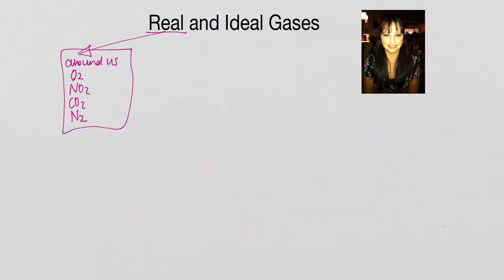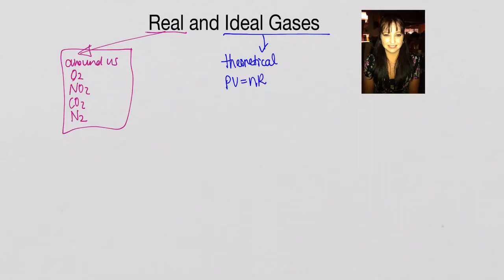Real gases are around us and basically they have a lot of interactions between the particles. Now let's quickly look at ideal gases. An ideal gas actually doesn't exist — it's basically only a theoretical or hypothetical gas. It's only used to describe a perfect mathematical relationship that we have in our ideal gas equation. Remember in our last video we looked at this equation: PV equals nRT.